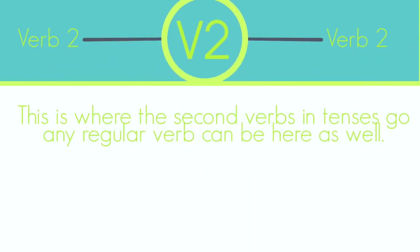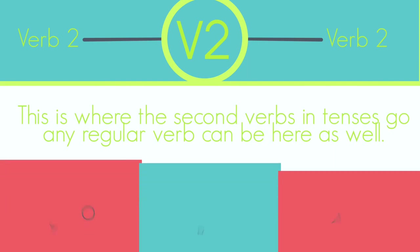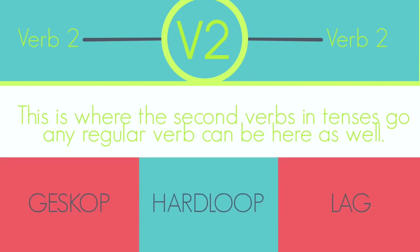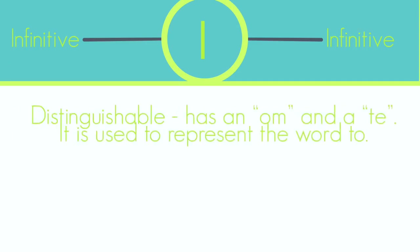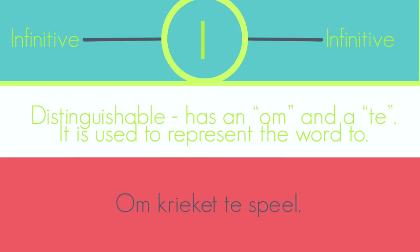The second verb comes next. This is where you add all of your 'ge-' forms in the past tense, and where the second verb in the future tense goes, such as 'word'. The second verb can also be any regular verb. The final part of Stompy is the infinitive verb. This is very distinguishable because an infinitive is where you have 'om' and 'te' in the second part, and it looks a lot like a sentence.